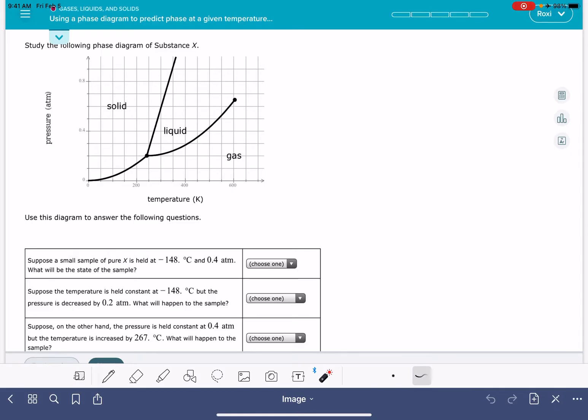I'm going to work through three different questions with pressure-temperature combinations, and you just have to find those combinations on the phase diagram and read the phase. For example, this is saying we have a sample of X at negative 148 degrees Celsius. Let's make sure we're thinking about that in terms of Kelvin. That's 125 Kelvin.